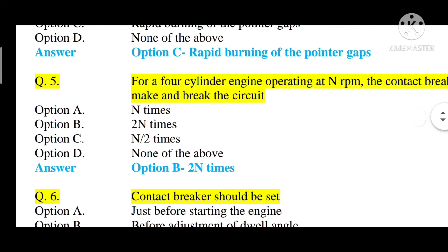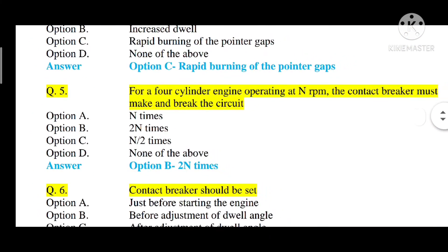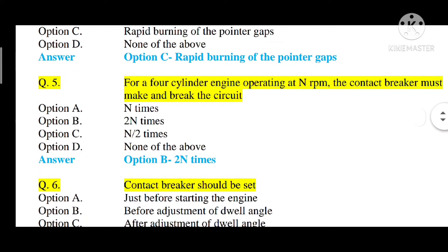Question number five: for a four-cylinder engine operating at N RPM, the contact breaker must make and break the circuit — option A: N times, option B: 2N times, option C: N/2 times, option D: none of the above. The correct answer is option B — 2N times.